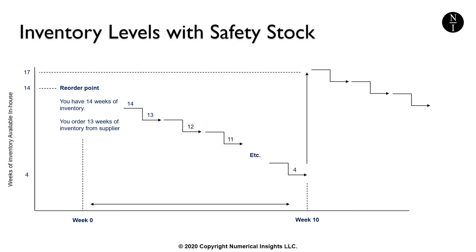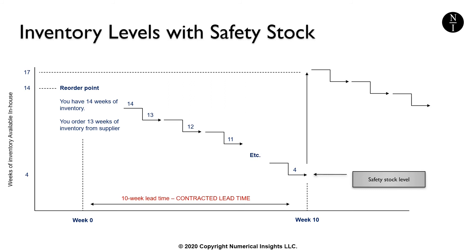In this example, the supplier's contracted lead time is 10 weeks. We want a safety buffer of 4 weeks of inventory. This means that when we reach the point of having 14 weeks of inventory in-house, we place an order with the supplier. Our example company likes to order 13 weeks of inventory at a time. If the supplier delivers on time — i.e., in 10 weeks — the new inventory should arrive just as we are reaching an inventory level of 4 weeks' worth of stock. When the stock arrives, our inventory level will rise from 4 weeks' worth to 17 weeks' worth, and when it reaches 14 weeks' worth again, we place another order, and the cycle continues.